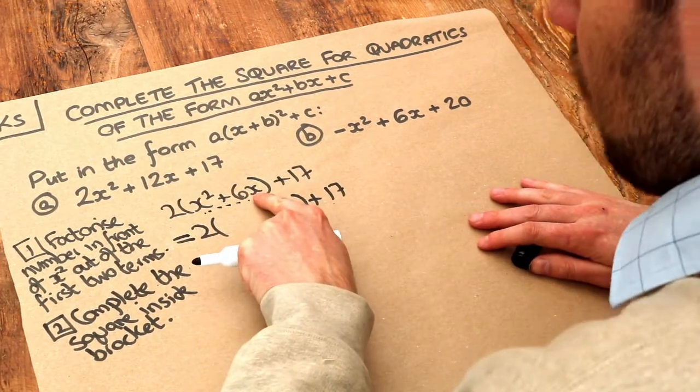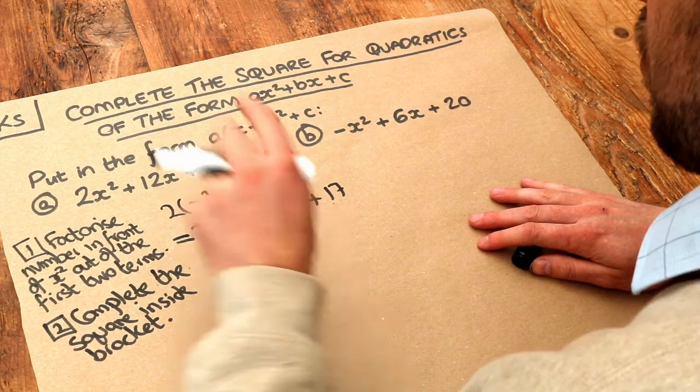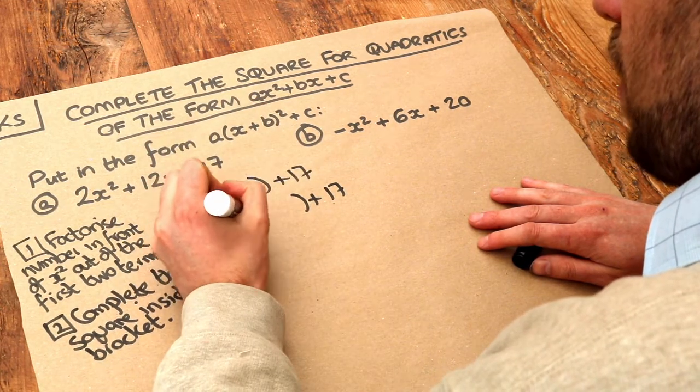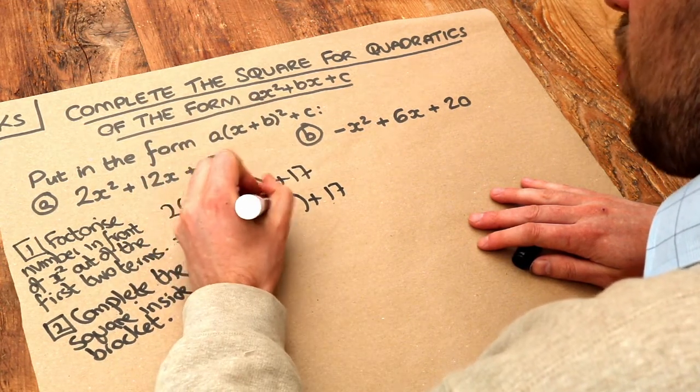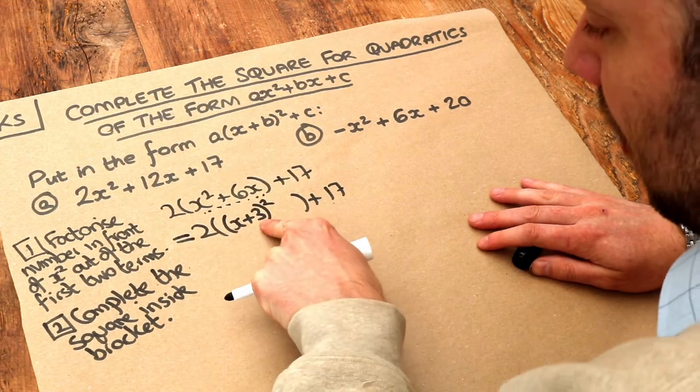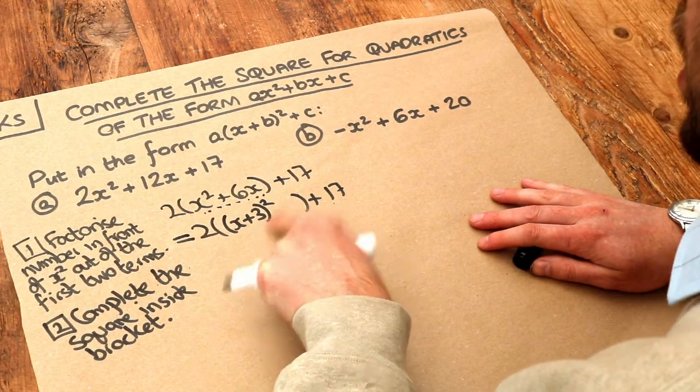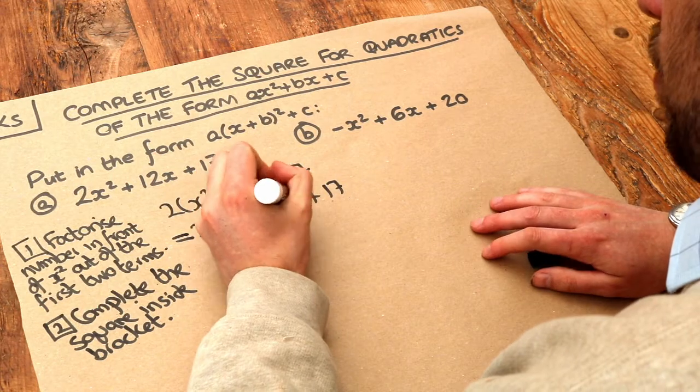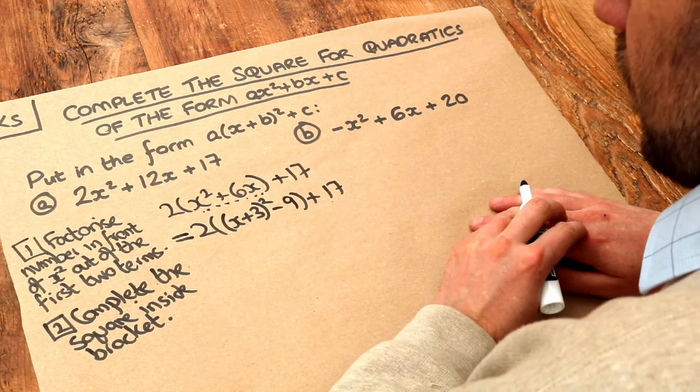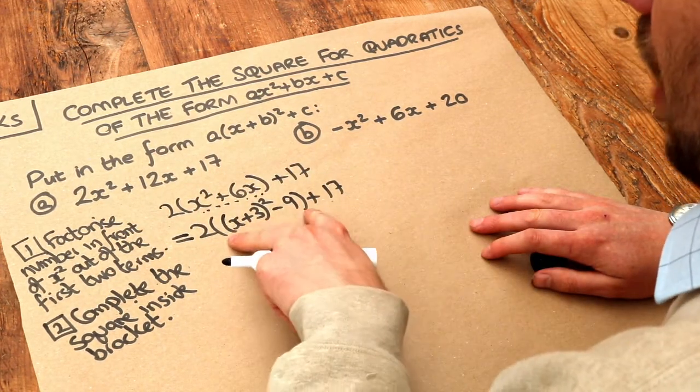So do you remember that we halve the number in front of x, so half of 6 is 3 and we write x plus 3 closed bracket squared. And do you remember whatever that number is there, the plus 3, you square it and throw it away. So we have minus 9. And notice by the way we have a bracket within a bracket.